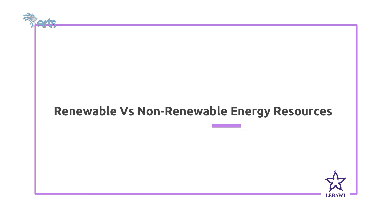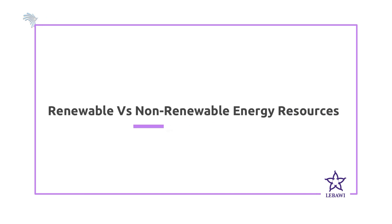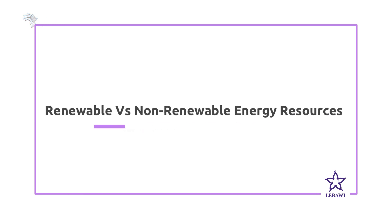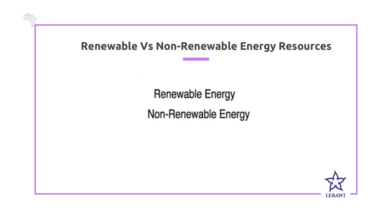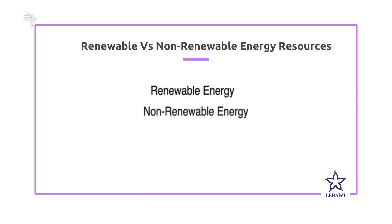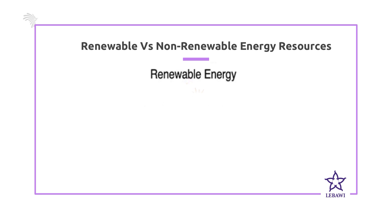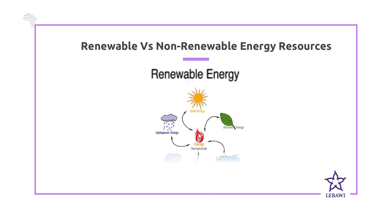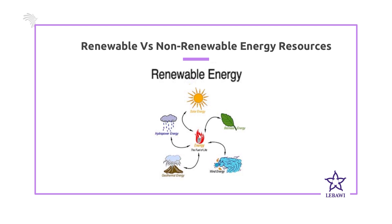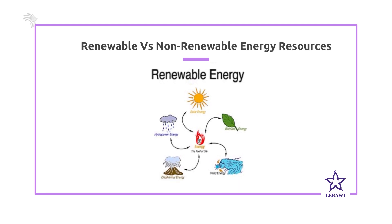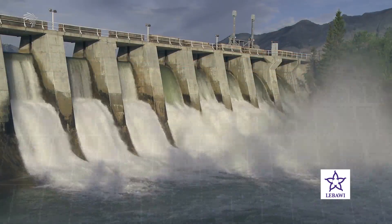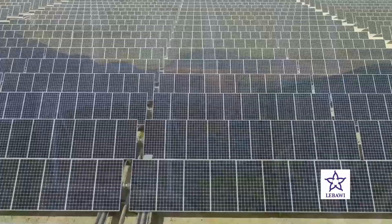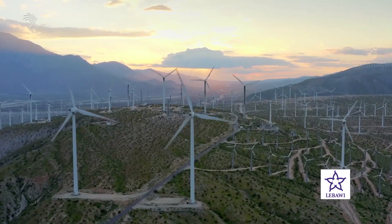Where do we get these energies? We have different resources, and we classify them into two: renewable and non-renewable energy resources. When we say renewable, as the name indicates, it can be renewed and regenerated. In our country, Ethiopia generates renewable energies from hydroelectric power, solar energy, biomass energy, wind energy, and geothermal energy.